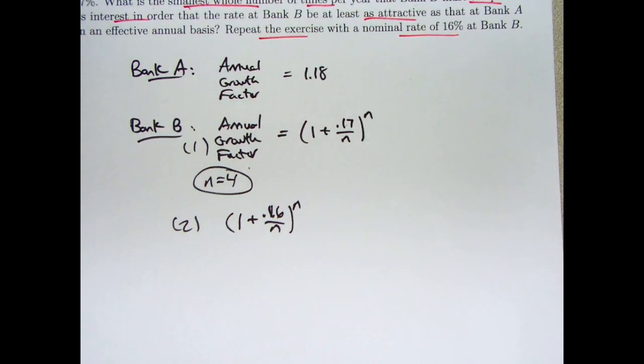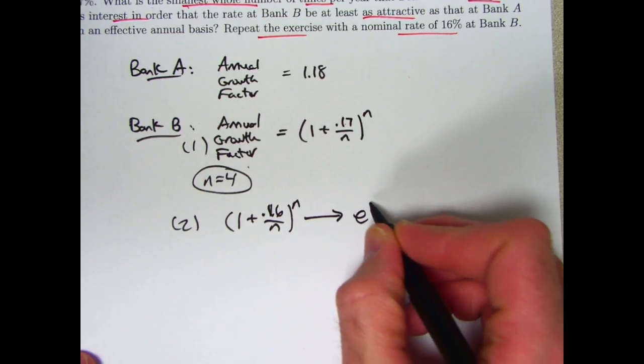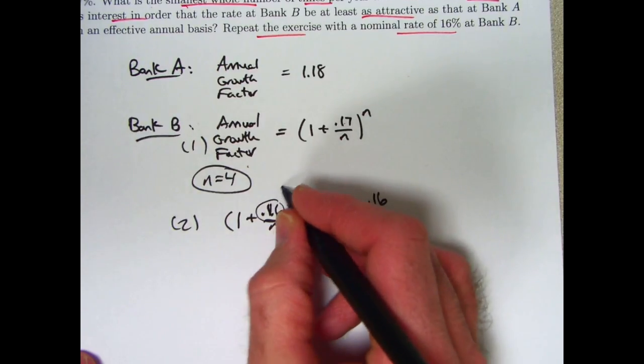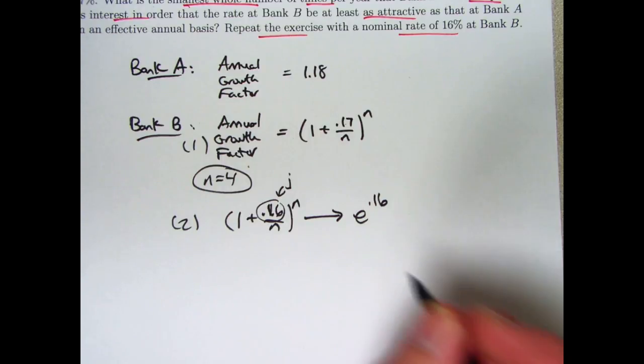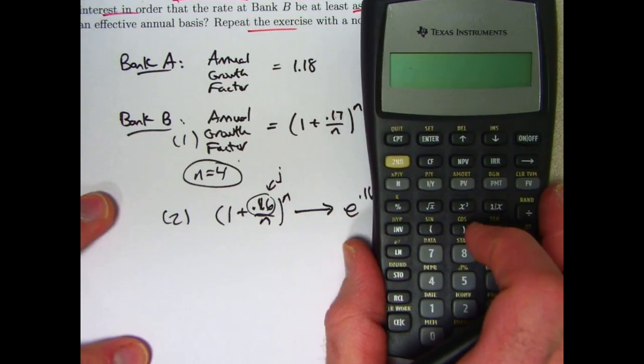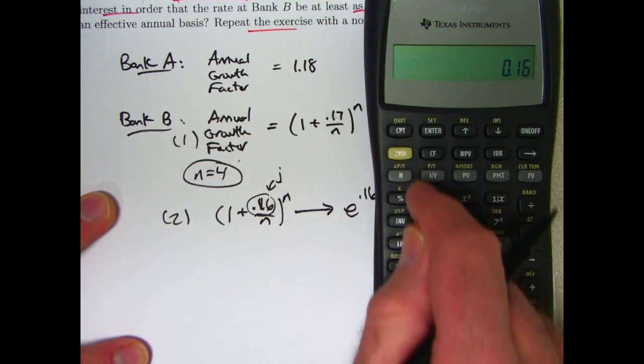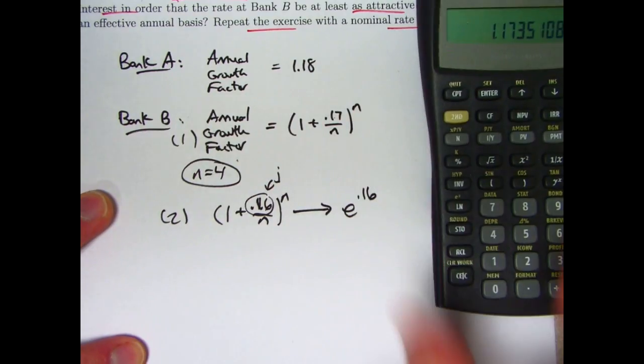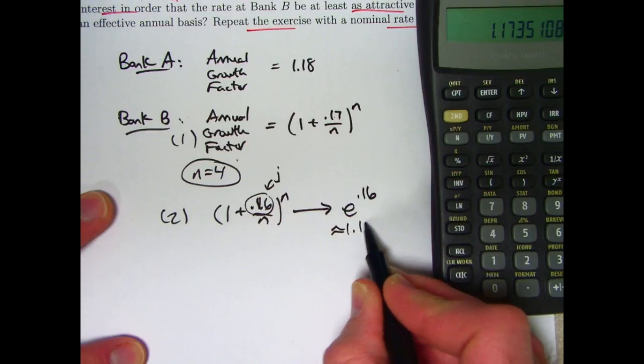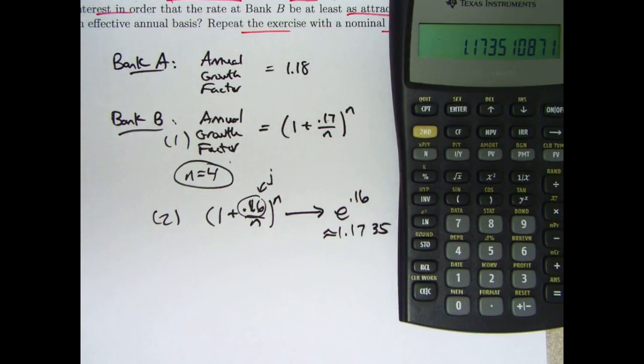And, indeed, now we relate this to the last video. As N goes to infinity, this thing is going to approach E to the 0.16. In the last video, this quantity was called J. And we saw at the end of the last video, that is, the number of compounding periods goes to infinity. The effective annual growth factor will approach E to the J. That's E to the 0.16 in this case. What is E to the 0.16? Type in 0.16. To raise it to the E power, go second, and then press this button. There we go. E to the 0.16 is not bigger than 1.18. It's about 1.1735. You're never going to get bigger than that, no matter how many times you compound a year. So, you're never going to get above 1.18.